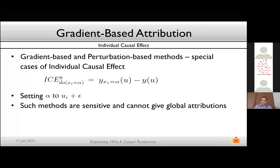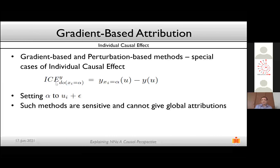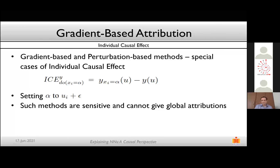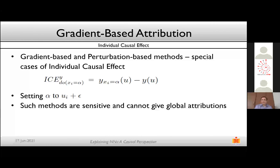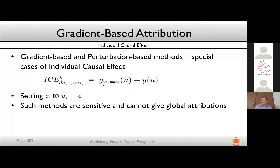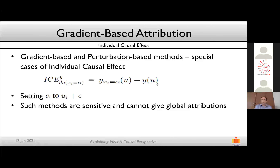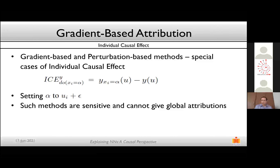Existing gradient-based attribution methods can be viewed as measuring individual causal effect (ICE). ICE is when you intervene on attribute Xi and set it to alpha — fixing blood pressure to 120/80 for example — and then measure the causal effect on the output. This is given by Y(Xi = alpha, U) minus Y(U) in some general scenario. When alpha is set to Ui plus epsilon, it becomes a gradient-based attribution method, since you're perturbing input Ui by a small value epsilon and measuring the causal effect.